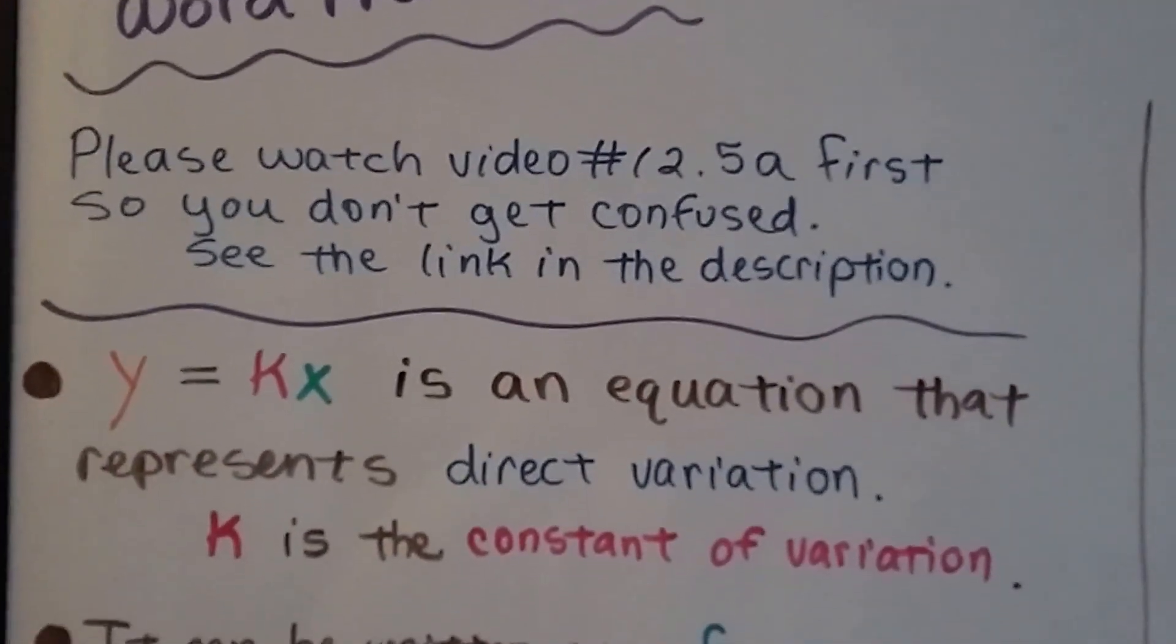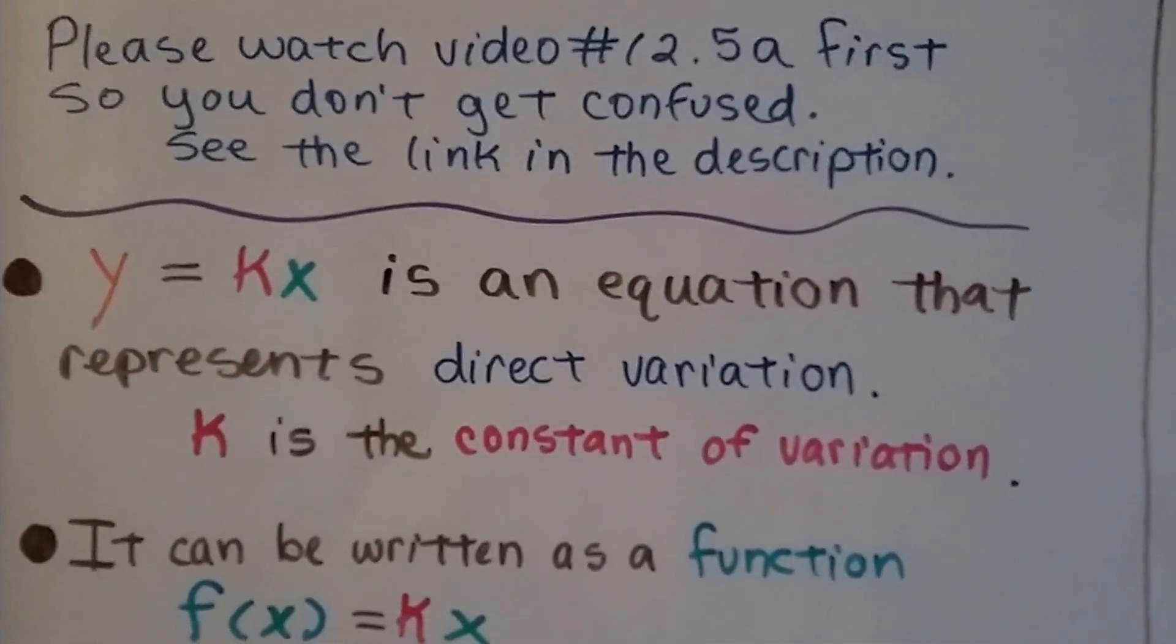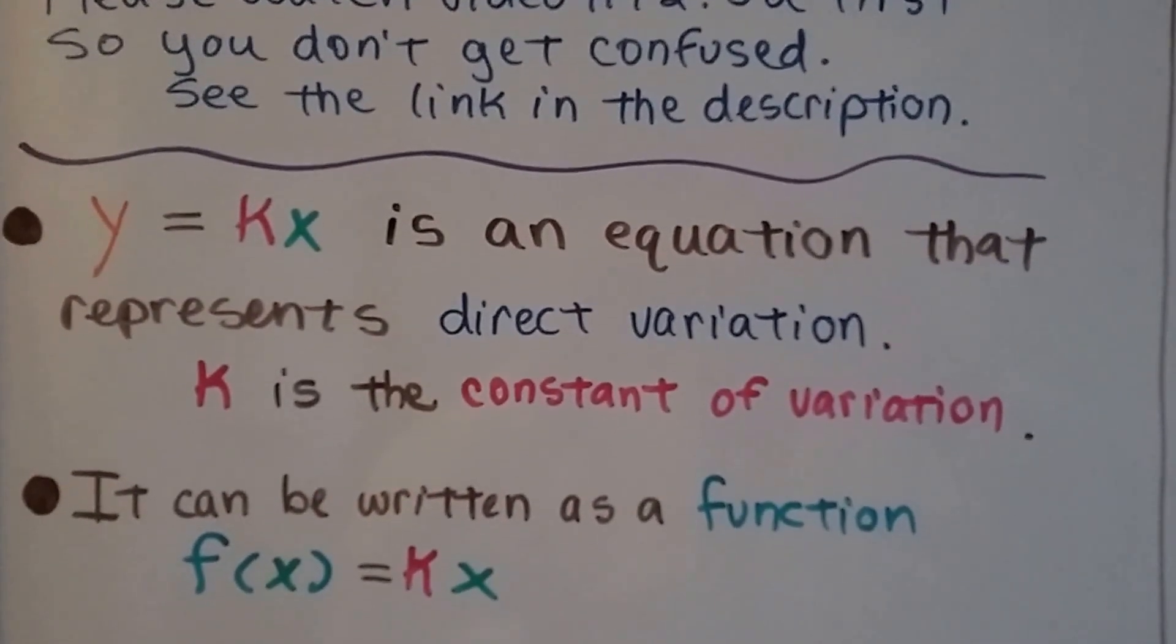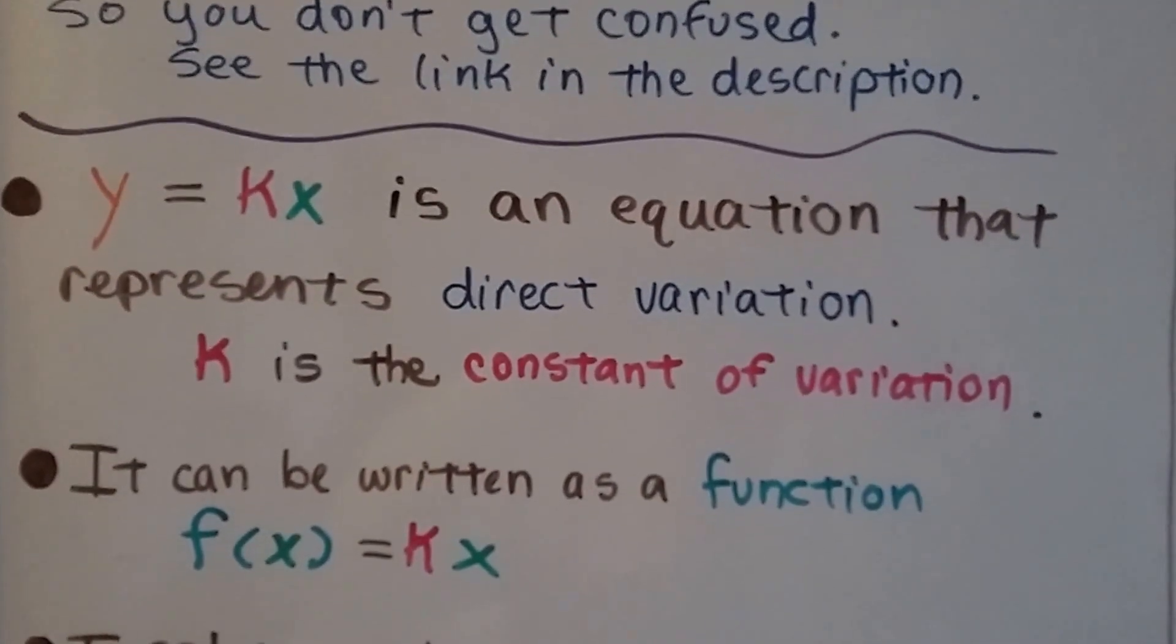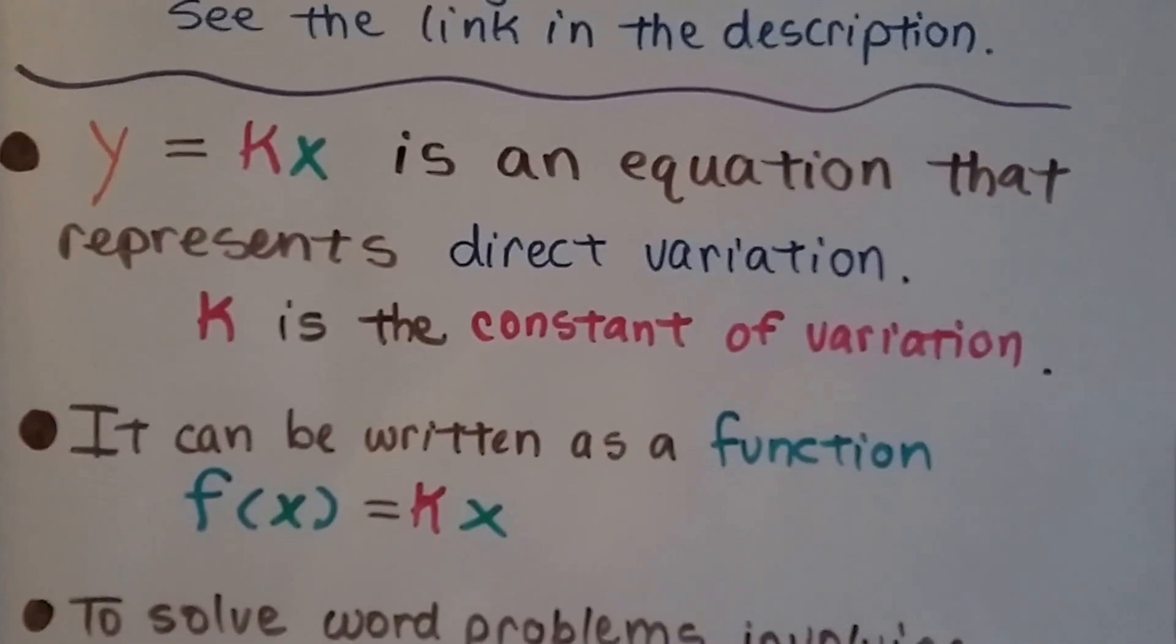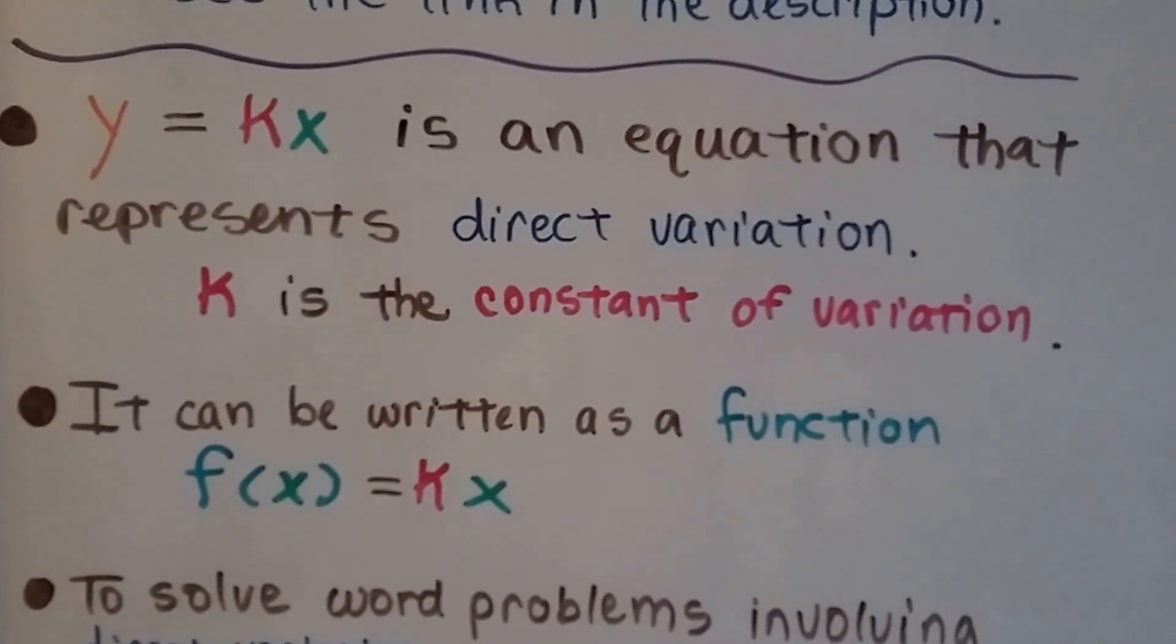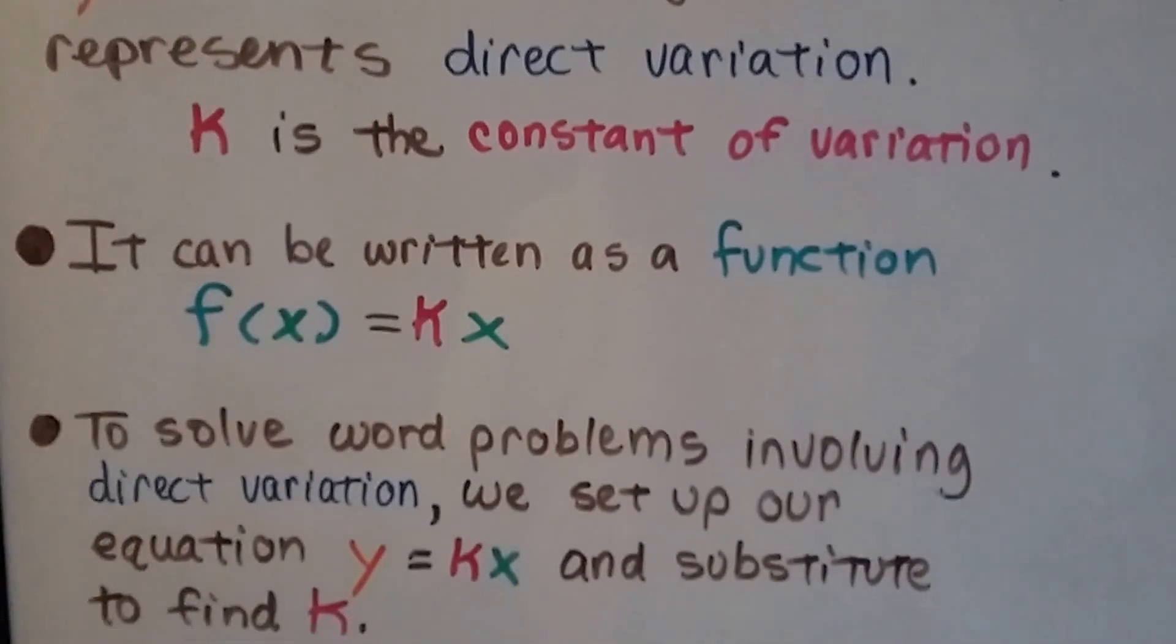So y equals kx is an equation that represents direct variation. And k is the constant of variation, the constant value that doesn't change. And the x and y are going to change. It can also be written as a function, the function of x equals kx.